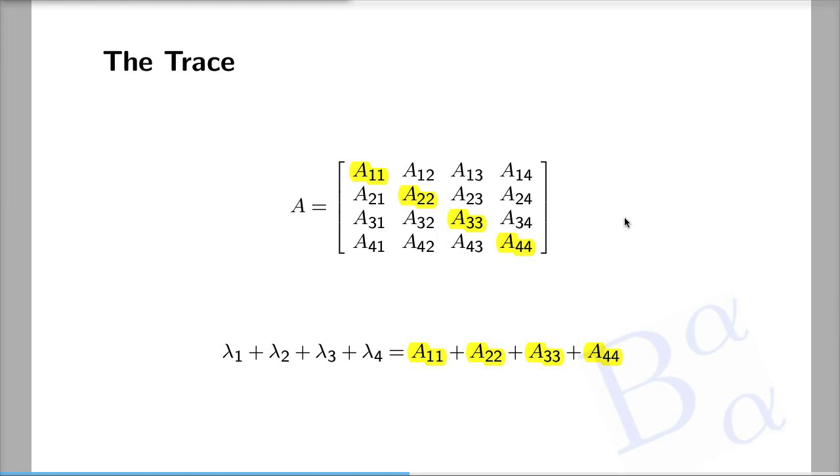It turns out that the sum of the eigenvalues equals the sum of the diagonal elements, highlighted here in yellow. And the sum of the diagonal elements is called the trace.